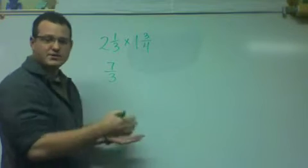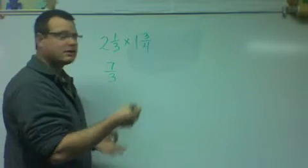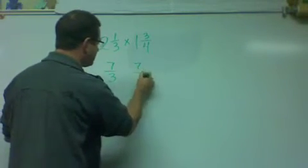Four times one is four, plus three, seven, seven-fourths.